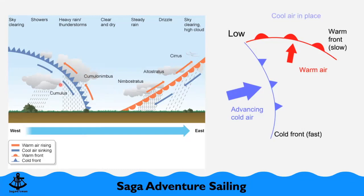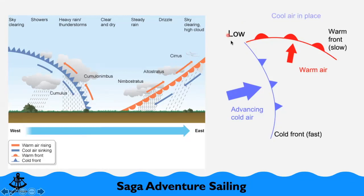After the cold front passes, you start to get blue sky, but with the odd cumulus cloud that can give a shower or a squall. Also worth noting — the cold front moves a little bit faster, which is why these fronts start to develop into a low pressure system or depression, which is what drives our weather systems.